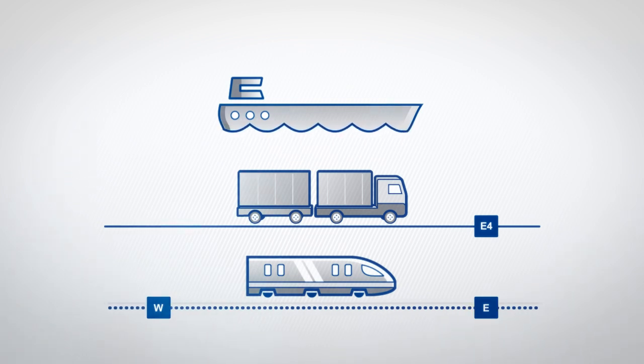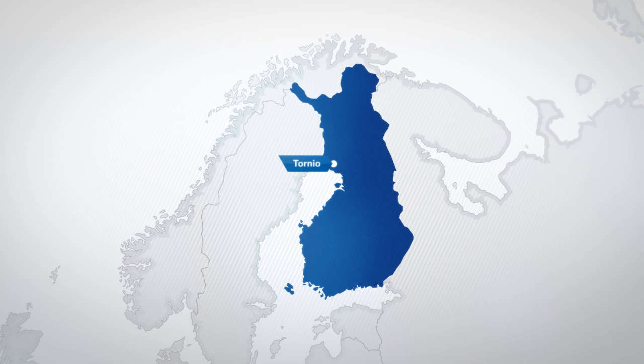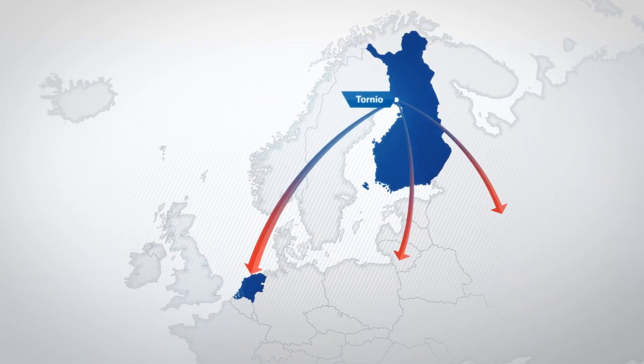Semi-produced stainless steel is shipped to the Terni plant by using a regular vessel connection. Finished products are delivered from Tornio and Terni to customers all over the world, utilising all available transport methods.